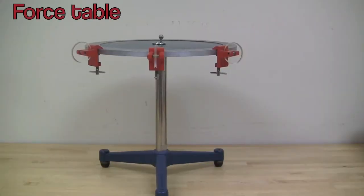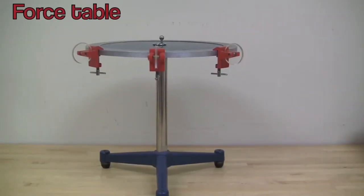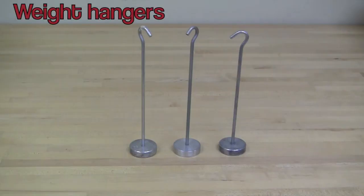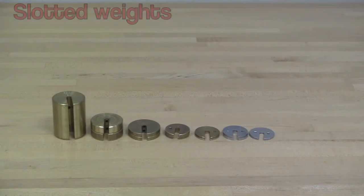You will be using a circular horizontal table with a 360-degree scale, pulleys, weight hangers, slotted weights, a protractor, and rulers.